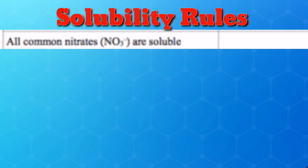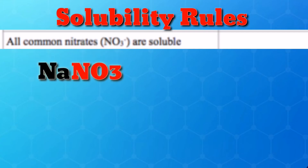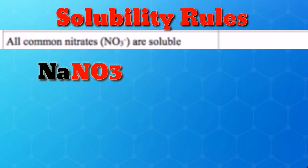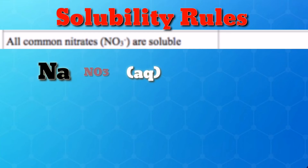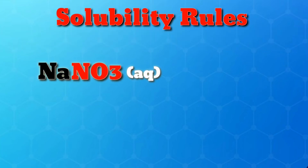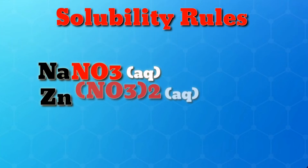Rule 2: All compounds of the nitrate ion are generally soluble. Example: sodium nitrate — from Rule 1, sodium is in Group 1A where all compounds are soluble, and Rule 2 also confirms all nitrate compounds are soluble. The same applies to zinc nitrate, aluminum nitrate, cesium nitrate, and all other compounds containing nitrates.